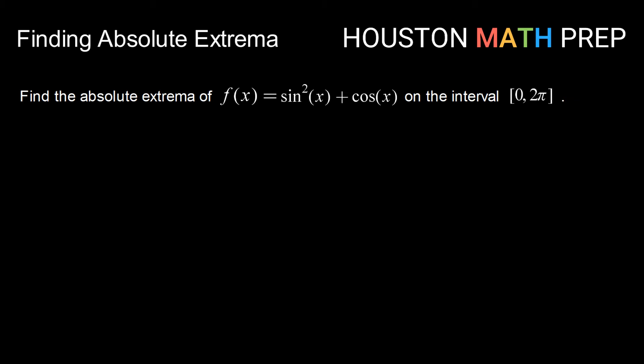Alright guys, let's do one more finding absolute extrema. So let's start by finding our derivative. So f prime of x, using our chain rule here, that will be 2 sin x times our derivative for sin x, which is cosine x, plus our derivative for cosine x, which is minus sin x.